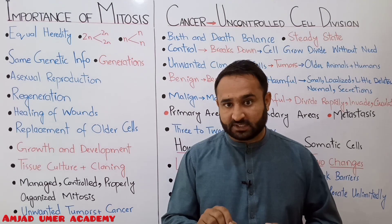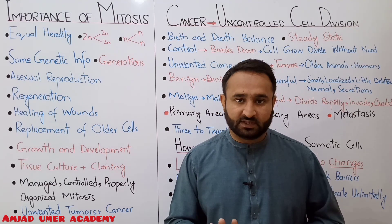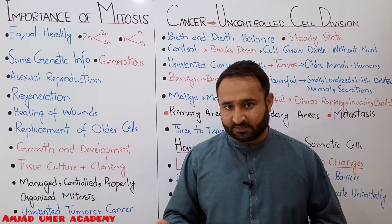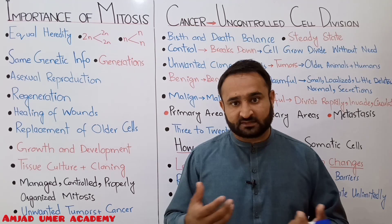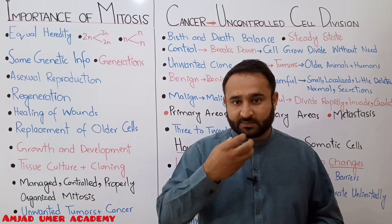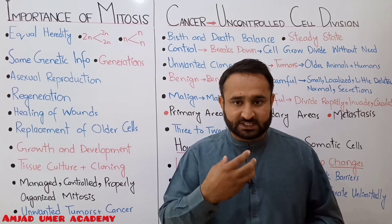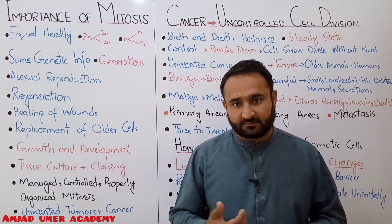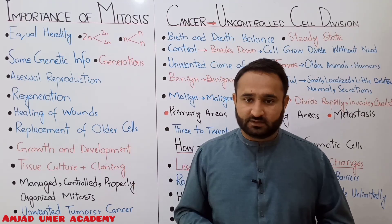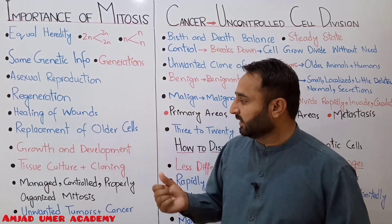Replacement of older cells. Our body has red blood cells — erythrocytes — whose lifespan is 120 days, i.e., four months. After four months they need to be replaced. New cells form through mitosis. White blood cells have a lifespan of 15 days; they regenerate and are replaced. Similarly, the cells lining the gastrointestinal tract constantly break off and new cells form — this is all because of mitosis.